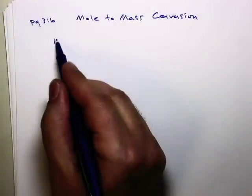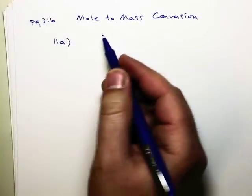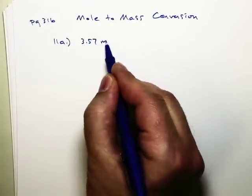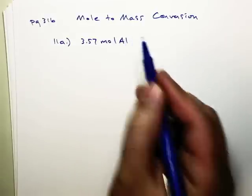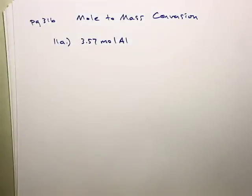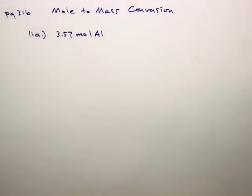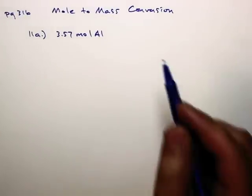Alright, in number 11a, we have 3.57 moles of aluminum. And what we've got to figure out is how much does this weigh? What is the mass of 3.57 moles of aluminum?